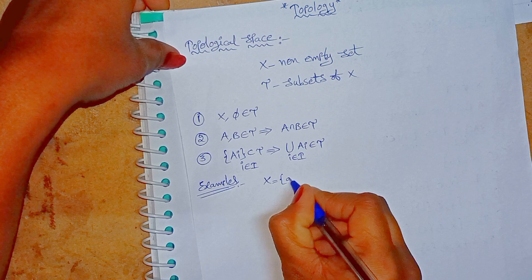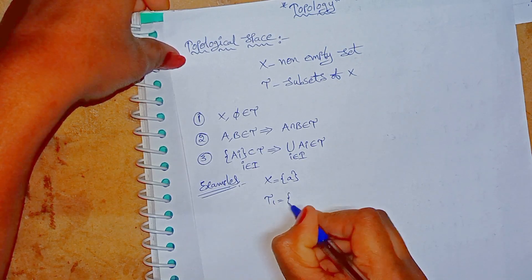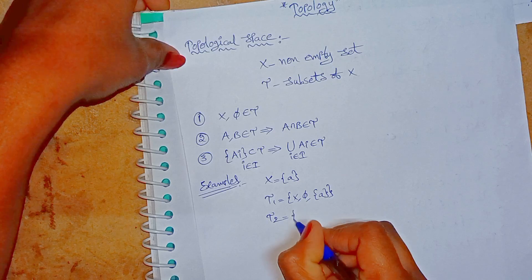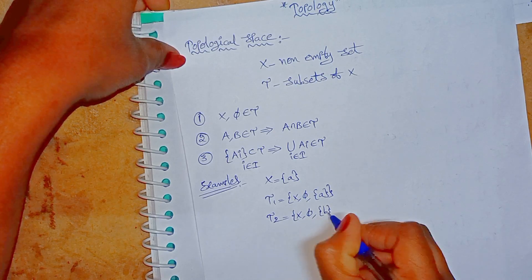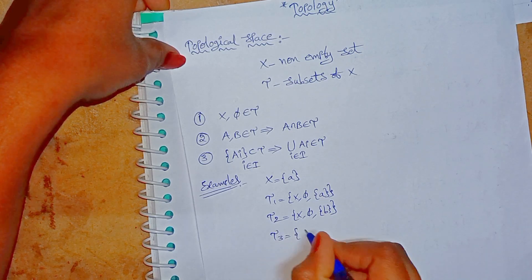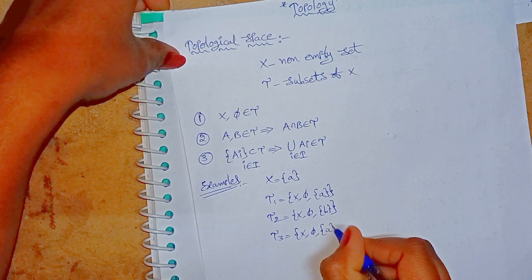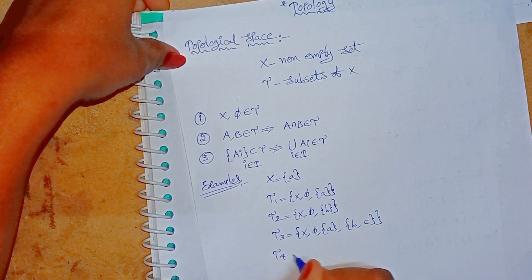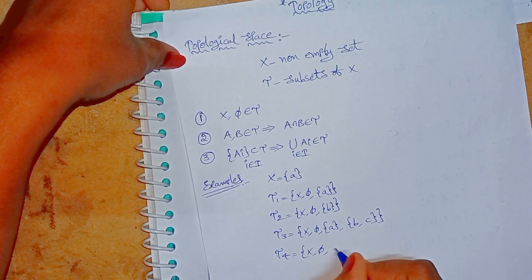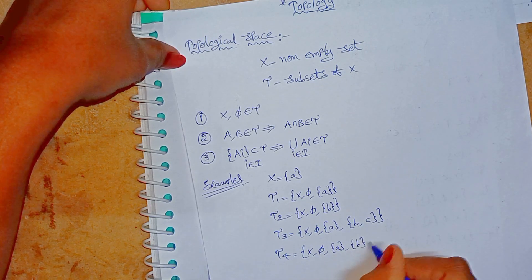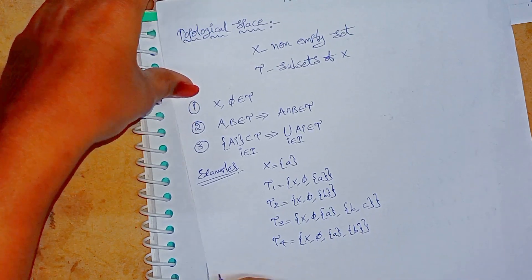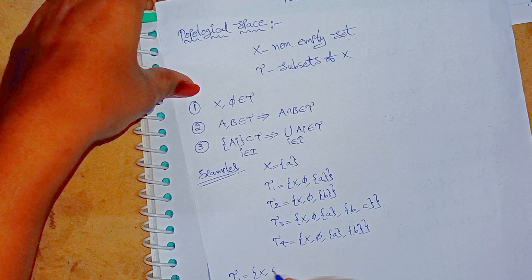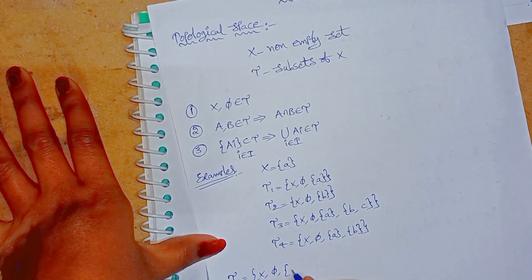Let X equals {a}. We define: tau1 = {X, ∅, {a}}, tau2 = {X, ∅, {b}}, tau3 = {X, ∅, {a}, {b,c}}, tau4 = {X, ∅, {a}, {b}}. Find out which of these are topological spaces. For tau1 = {X, ∅, {a}}.